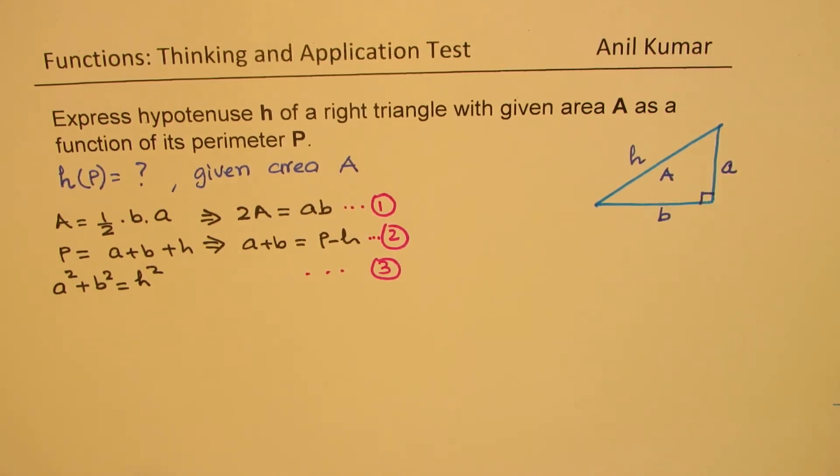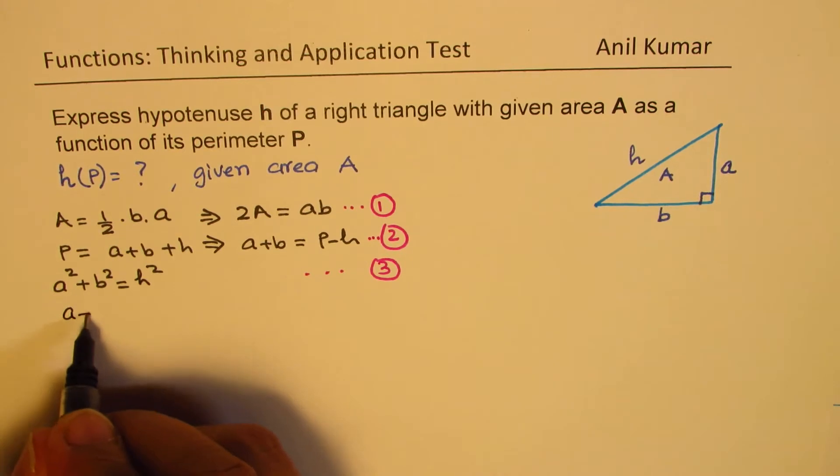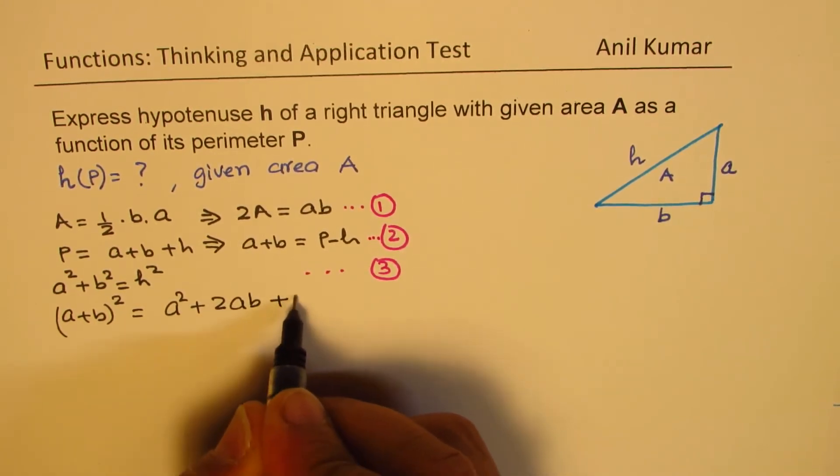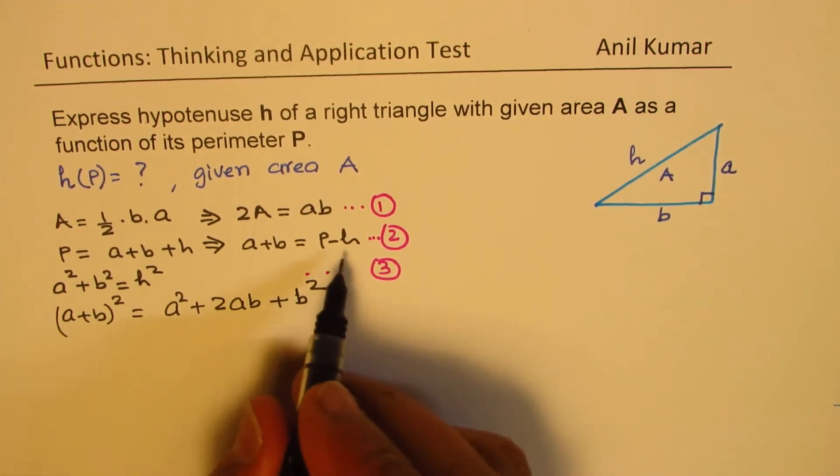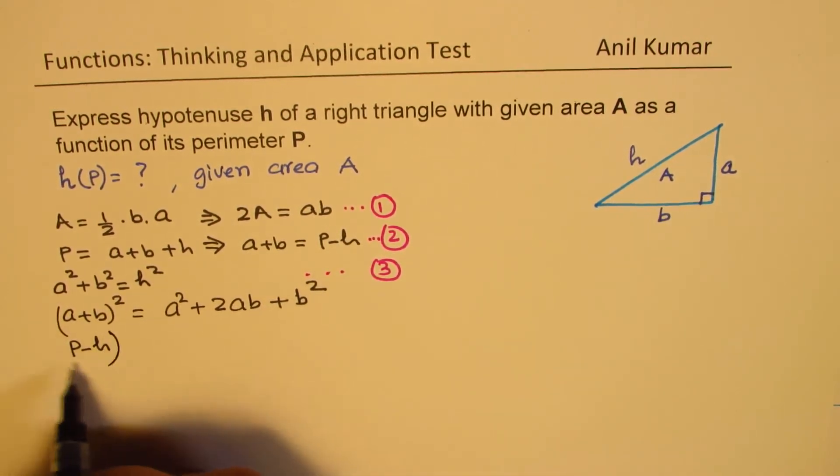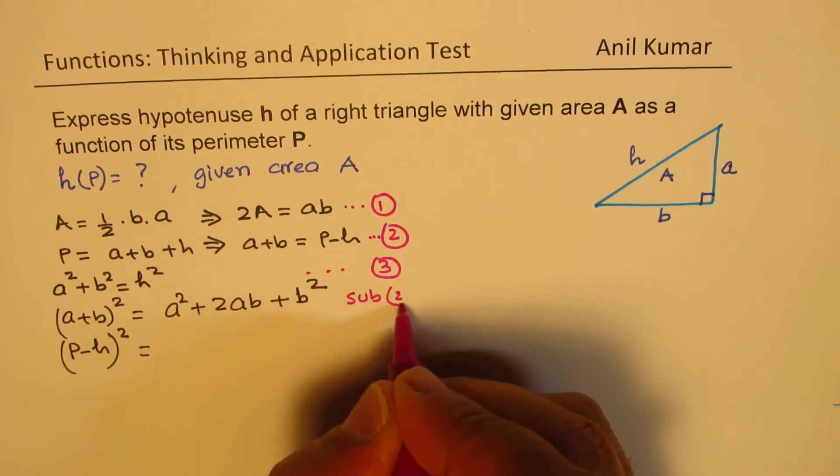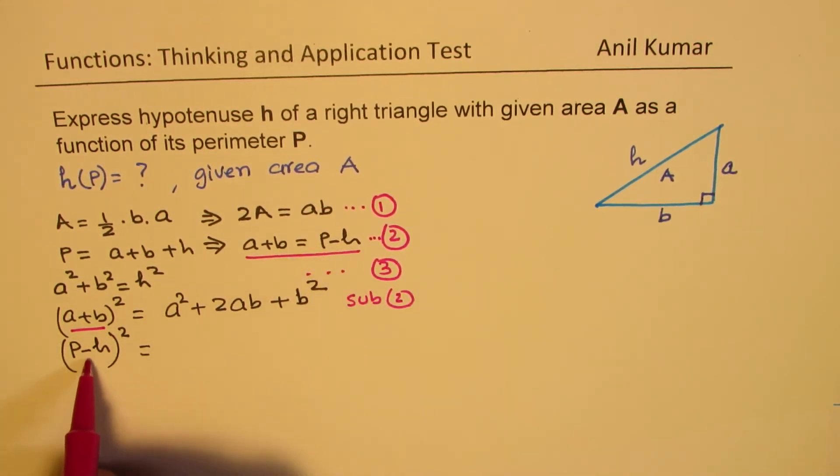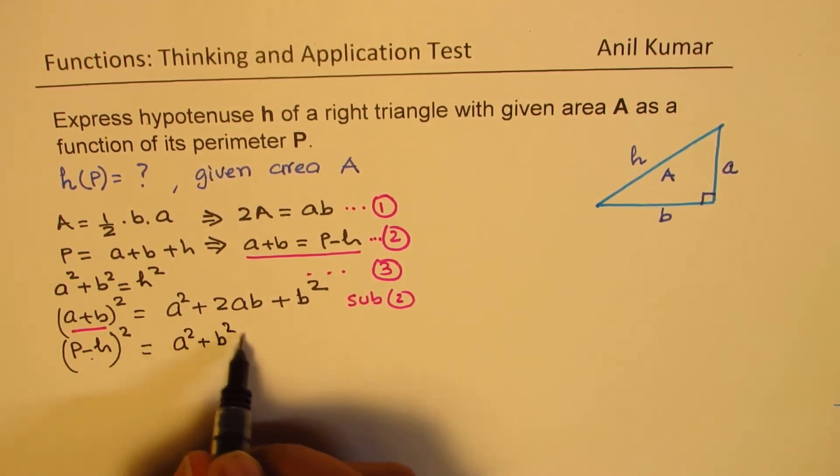Now, how do we relate hypotenuse as a function of perimeter? Well, let's begin with something like this. We know a plus b, if I write whole square of a plus b, I get a squared plus 2ab plus b squared. Now, a plus b is P minus h. So I could replace a plus b with perimeter minus hypotenuse and square. So what we did here, we sub equation 2 in here. Now, on the other side, we can rearrange and write this as a squared plus b squared plus 2ab.